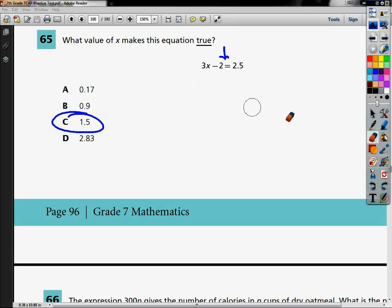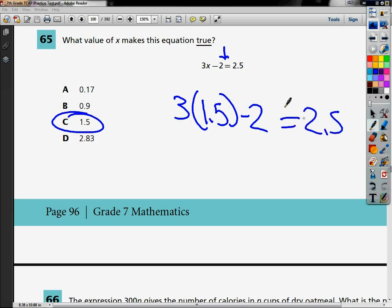So let's try it with our answer choice that we figured out earlier, 1.5. So I'm going to do 3, parenthesis, 1.5, minus 2, and it equals 2.5. That's a truth statement. When I plugged in 1.5 into my equation, I got the 2.5 I wanted. So it proves that C is the correct answer.